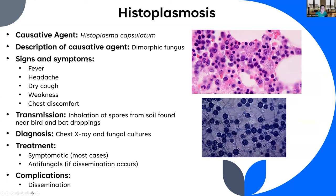Signs and symptoms include fever, headache, dry cough, weakness, and chest discomfort. The way you get this is by inhaling spores from the soil — typically histoplasmosis results from inhaling spores from bird or bat droppings. If you're an individual who finds themselves around a lot of bird droppings — maybe you raise pigeons — you're at risk.